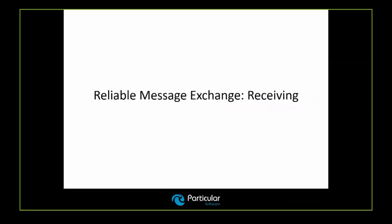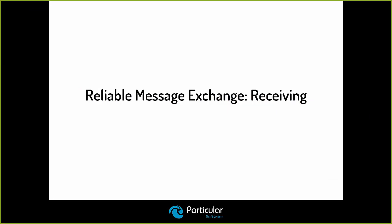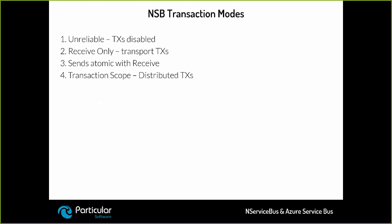Now let's look at the receiving capability. NServiceBus specifically distinguishes between four different transaction modes. The first is unreliable, where transactions are disabled completely. The second mode is receive only, ensuring that transactions are transport transactions only. The third mode is send atomic with receive, where we have transport transactions. The fourth mode provided by NServiceBus is transaction scope, where distributed transactions are utilized.